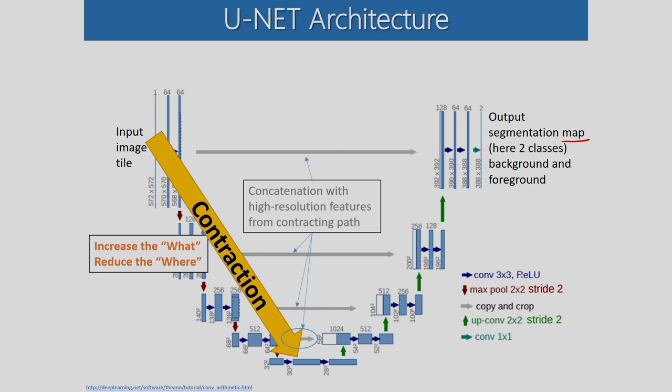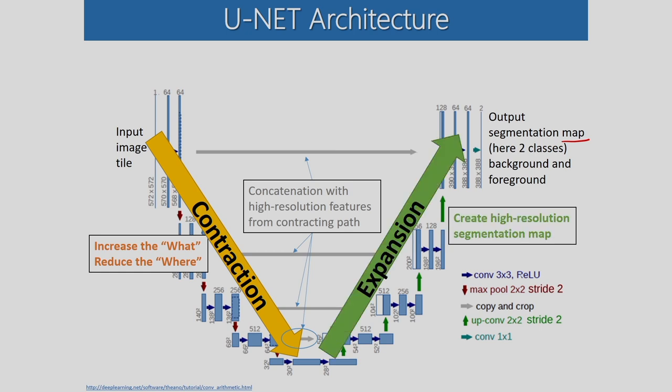This is the principle of UNET — the structure of UNET. In the contraction phase we are increasing the feature information, that is the 'what' information, but we are reducing the spatial information, the 'where' information. During the contraction phase we increase the 'what' information but reduce the 'where' information. During the expansion we create a high-resolution segmentation map using concatenation with high-resolution features from the contracting path.